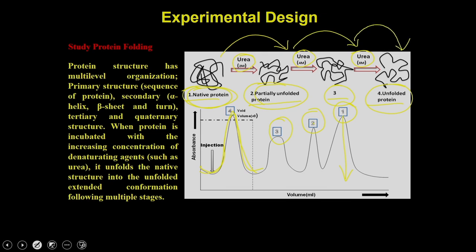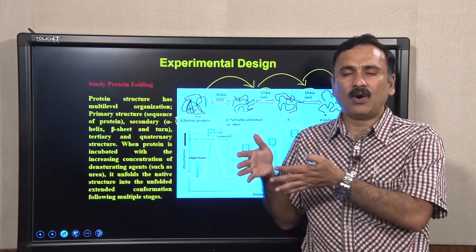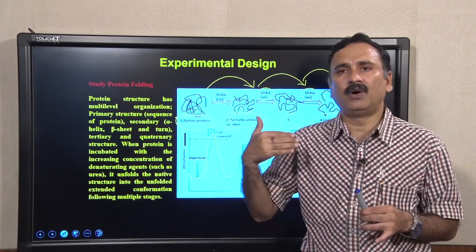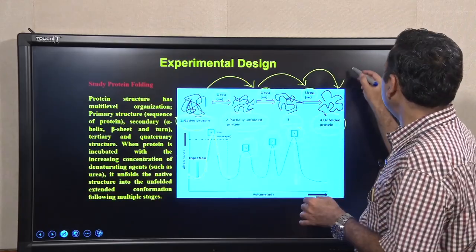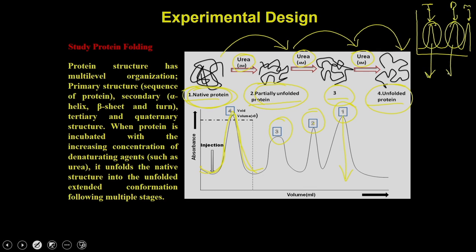The amount of urea required to shift the protein from native conformation to intermediate or unfolded conformations indirectly indicates how stable the native conformation is. This experiment can also be performed on individual oligomers — isolate the tetrameric, dimeric, and monomeric peaks separately, then perform similar denaturation experiments to determine which oligomer is more or less stable.